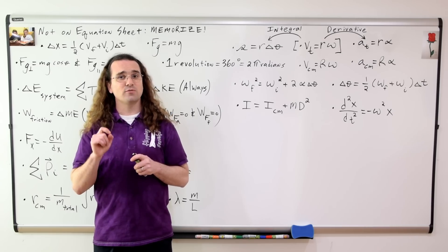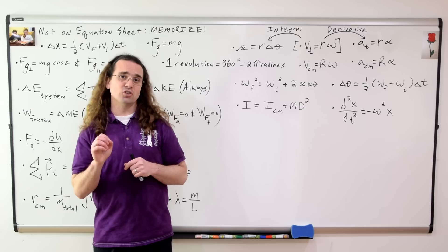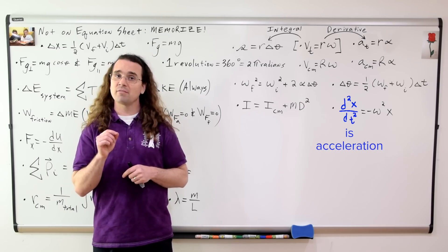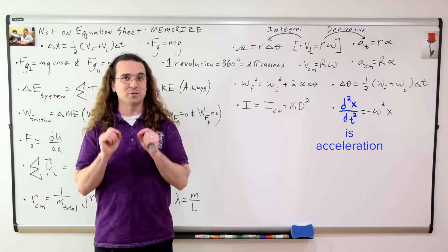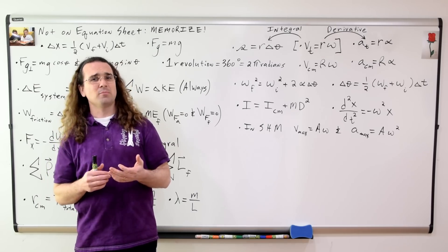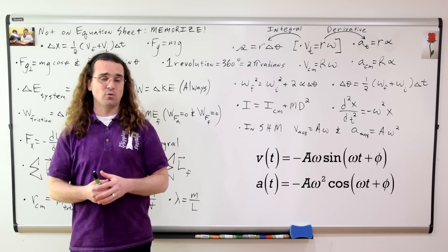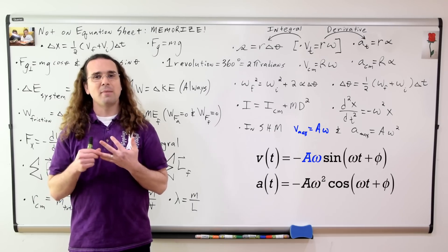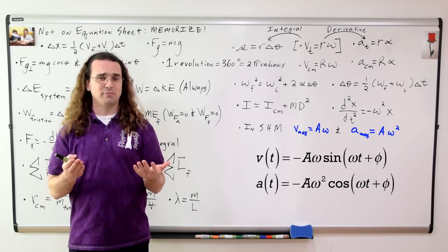The equation which describes the conditions for an object to be in simple harmonic motion is the second derivative of the position of that object with respect to time, or the acceleration of that object, is equal to the negative of the square of the angular frequency of that object times the position of that object relative to the equilibrium position. Two equations I recommend you memorize from the SHM acceleration and velocity equations: the maximum velocity is equal to the amplitude times the angular frequency, and the maximum acceleration is equal to the amplitude times the angular frequency squared. It's just helpful to have those memorized.